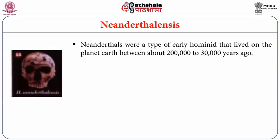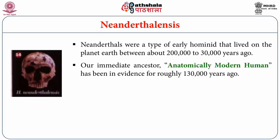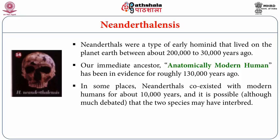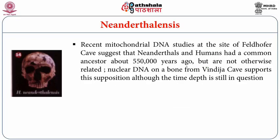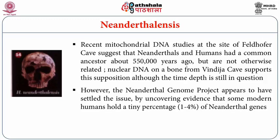Homo neanderthalensis lived on Earth between about 200,000 to 30,000 years ago. Our immediate ancestor, anatomically modern humans, has been in evidence for roughly 130,000 years ago. In some places Neanderthals coexisted with modern humans for about 10,000 years and may have interbred. Recent mitochondrial DNA studies at Feldhofer Cave suggest Neanderthals and humans had a common ancestor about 550,000 years ago. Nuclear DNA from Vindija Cave supports this, and the Neanderthal Genome Project uncovered evidence that some modern humans hold a tiny percentage of Neanderthal genes.